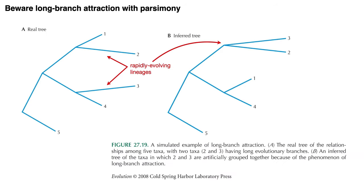Parsimony is simple and elegant, but it does have its problems. One in particular is long branch attraction, which is common when evolutionary changes happen at different rates in different branches of the phylogeny. This is particularly a problem for rapidly changing DNA loci. They can accumulate a lot of character changes, and because there are only four nucleotides that can get slotted into those spaces, it's common to interpret chance convergences as synapomorphies. The effect of this is that two lineages would appear to be closely related by error, and they often cause long branches to be arranged closer to the root of the tree.